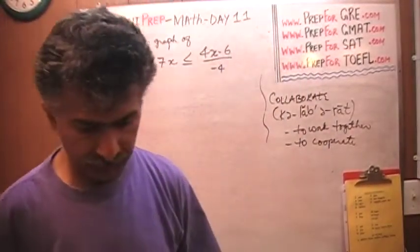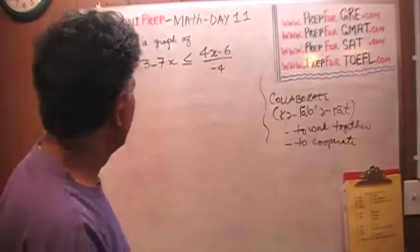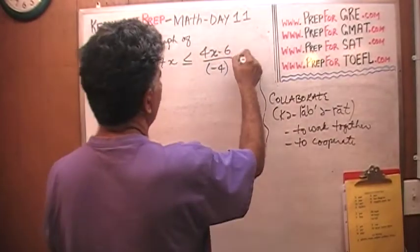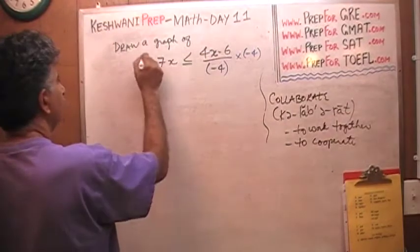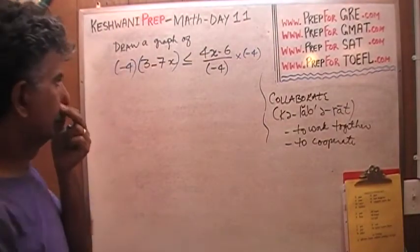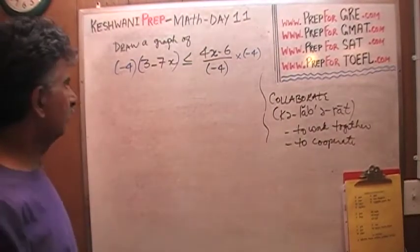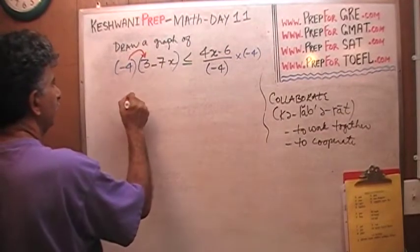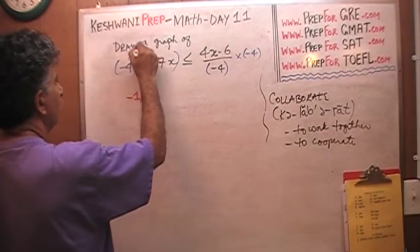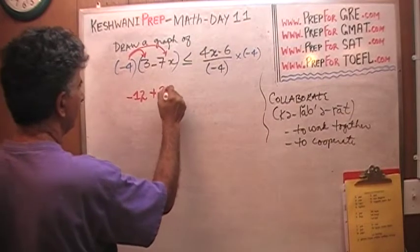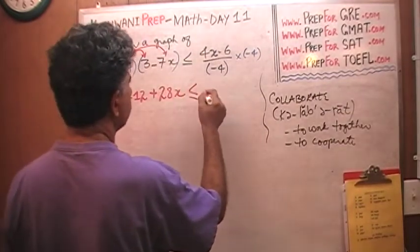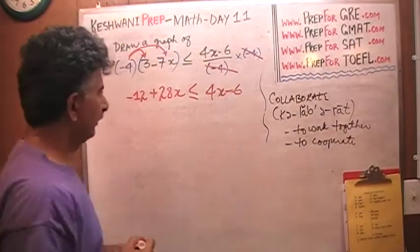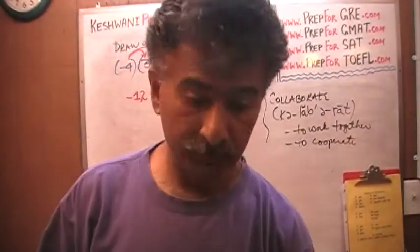So let's draw it. The very first thing we should notice is that we have a negative four in the denominator. We need to get rid of it — multiply both sides by negative four. Negative four times three is negative twelve, negative four times negative seven is positive 28x, and this negative four cancels out with the other negative four. If you skip that and go straight to x minus six, you're doomed.